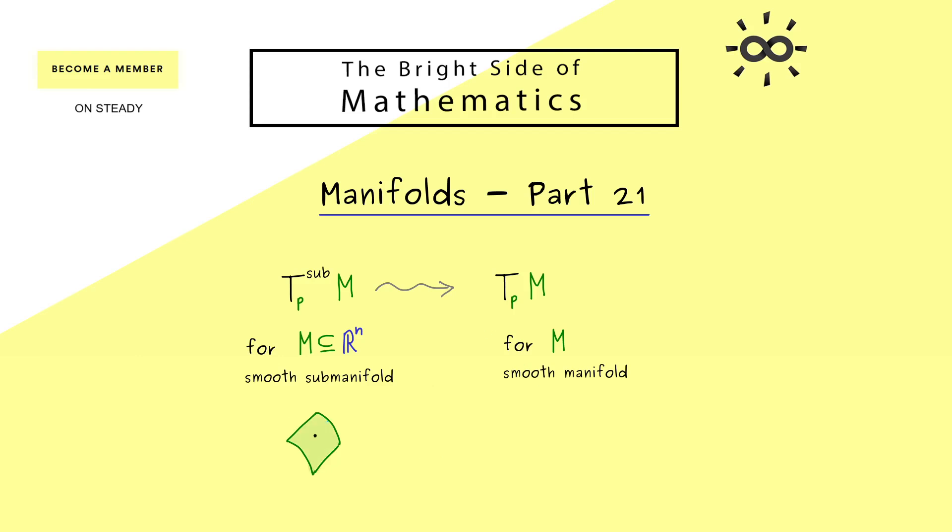However, the obvious problem there is, if there is no space around it, how can we define a tangent vector? On the other hand, on the left hand side here, you already know how it works, because we just need to take a curve gamma inside the manifold through the point p, and then the derivative of the curve gives us a tangent vector.